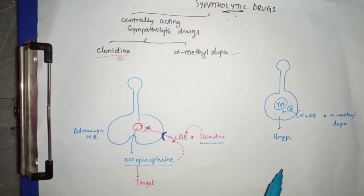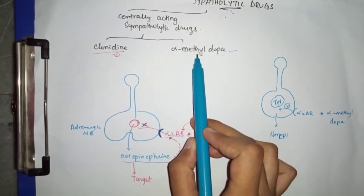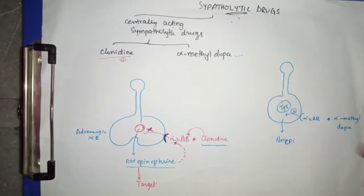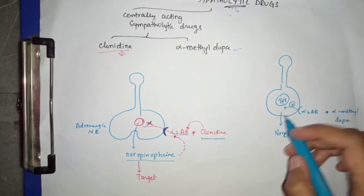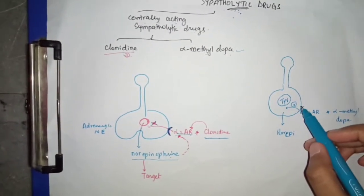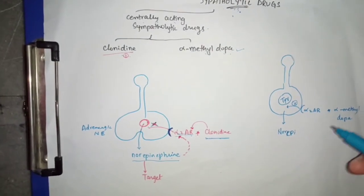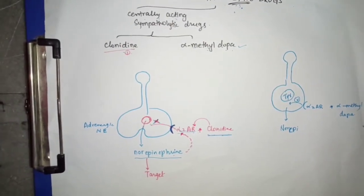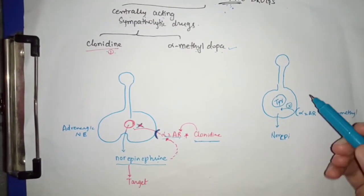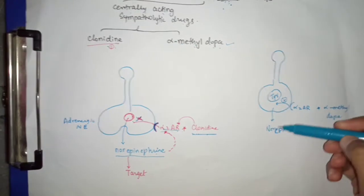The next drug in this group is alpha methyl dopa. As the name says, it is a methylated form of dopa. Normally, the nerve ending concentrates tyrosine, an amino acid, in its vesicles. Through a series of steps — tyrosine is converted into dopa, dopa into dopamine, and dopamine into norepinephrine — the nerve ending releases norepinephrine.